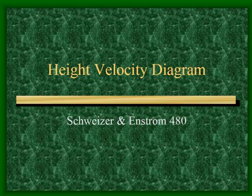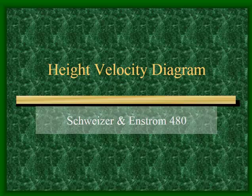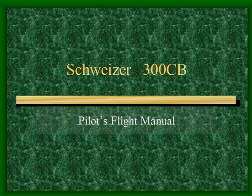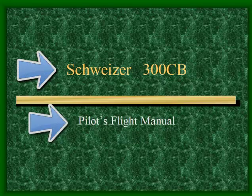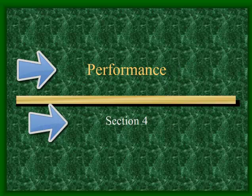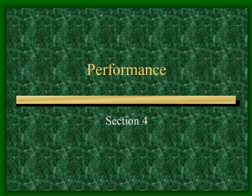For the height velocity diagram, I'm going to talk about the Schweitzer 300CB and the Enstrom 480. Starting with the Schweitzer 300 — in the Schweitzer pilot's flight manual, you want to go to the performance section, which is section 4. The tab only says 'performance,' but it is section 4.